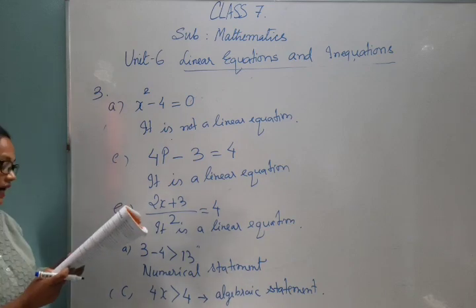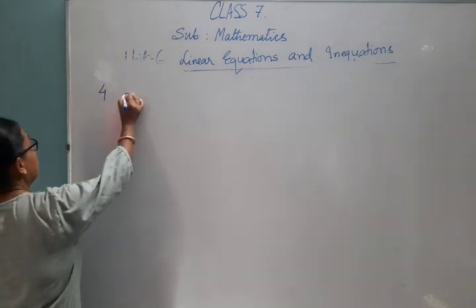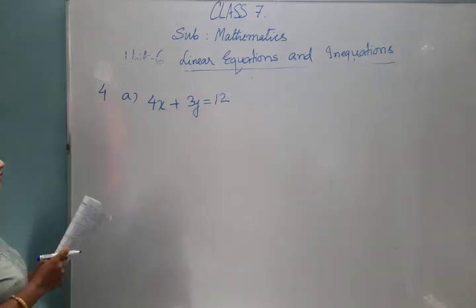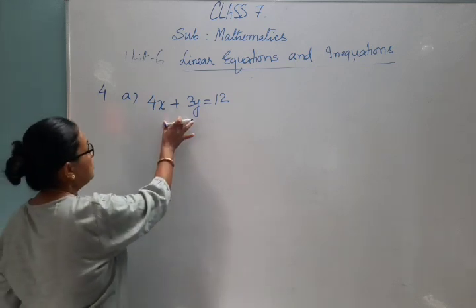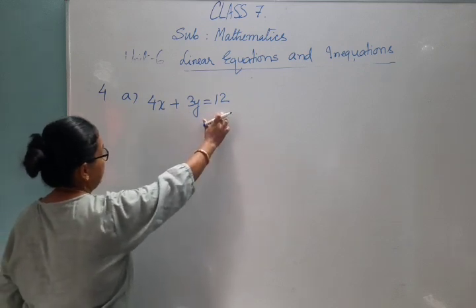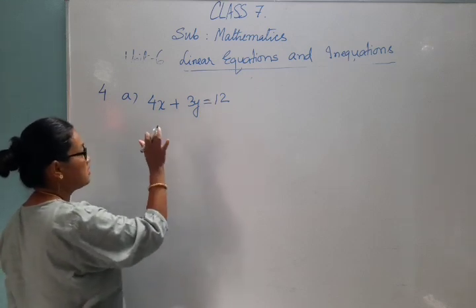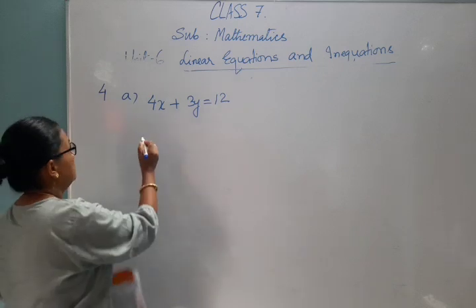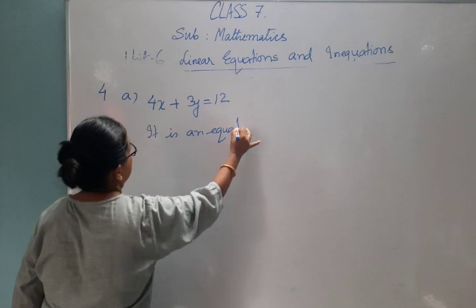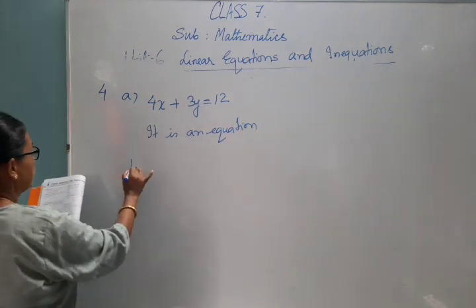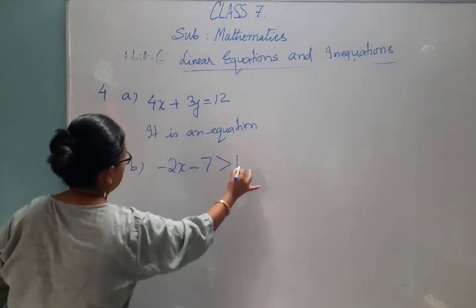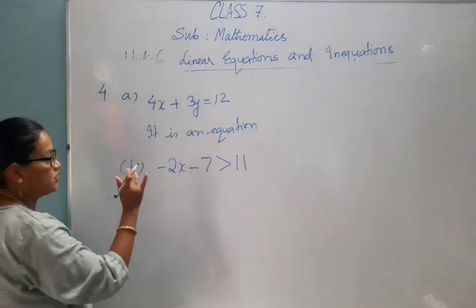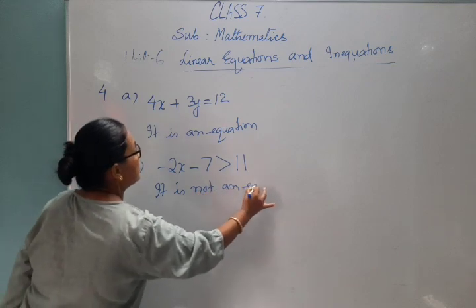We will go to question number 4: identify the equations from the following. Number 4A: four X plus three Y is equal to twelve. The expression has both a left-hand side and a right-hand side with the symbol equal, so the given question is an equation. Number 4B: minus two X minus seven is greater than eleven. The equal sign is not there, so the given question is not an equation.